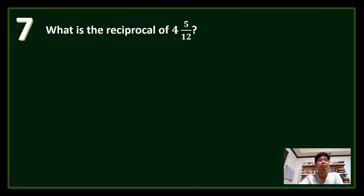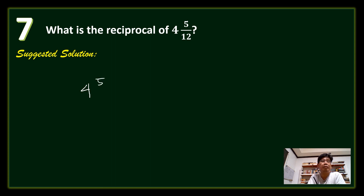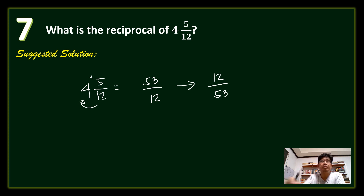Question number 7: What is the reciprocal of 4 and 5 twelfths? First, convert 4 and 5 twelfths to an improper fraction: 12 times 4 is 48, plus 5 is 53, giving 53 over 12. The reciprocal is therefore 12 over 53.